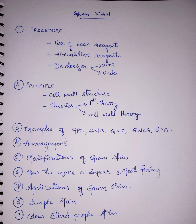Second question is the principle of gram stain. You have to know what is the difference between the cell wall structure of gram positive bacteria and gram negative bacteria, and also the two theories involved: the pH theory and the cell wall theory.